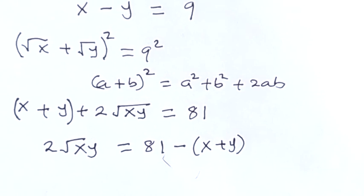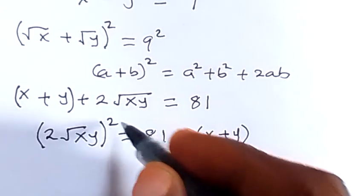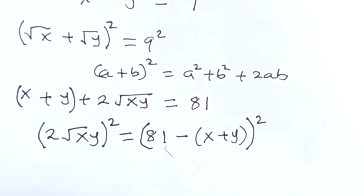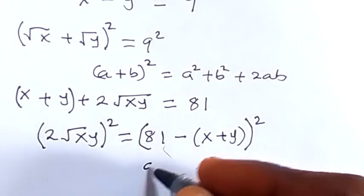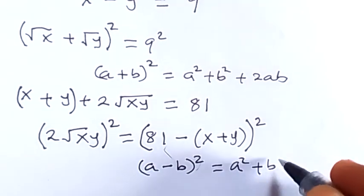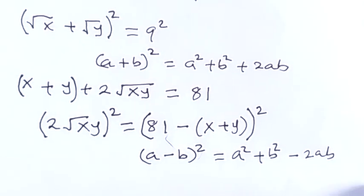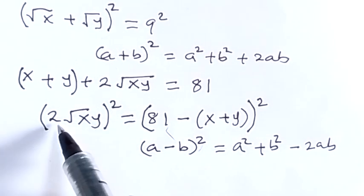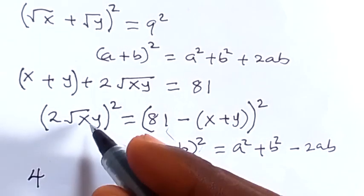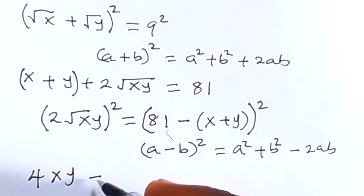Let us square both sides. Squaring the left side we have (2 root xy)² equals (81 minus (x + y))². Applying the identity (a - b)² equals a² plus b² minus 2ab on the right side. When we expand, we raise 2 to the power of 2: 2² is 4. Then root xy squared gives us xy because the square and square root cancel.